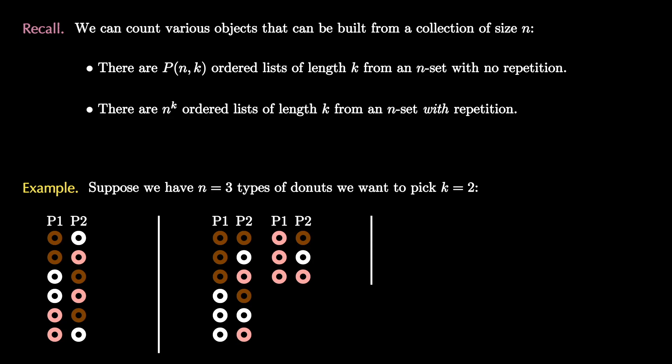The last situation arises when a single person selects two donuts without repetition. So they're selecting two donuts from three total types. In this case we use three choose two or n choose k and we see that there are three unordered selections of donuts.